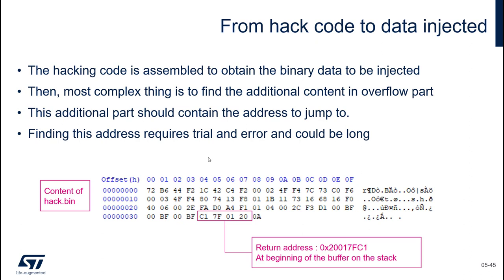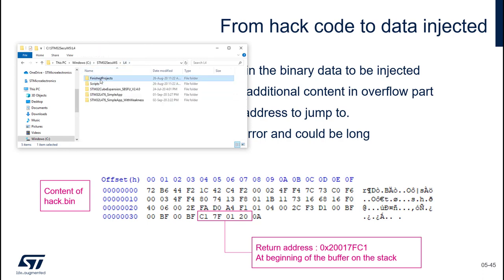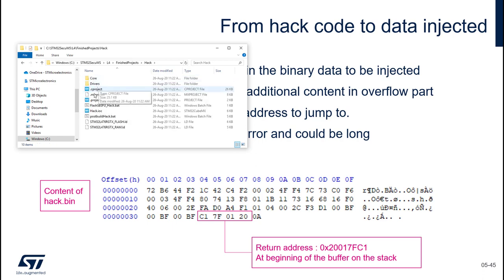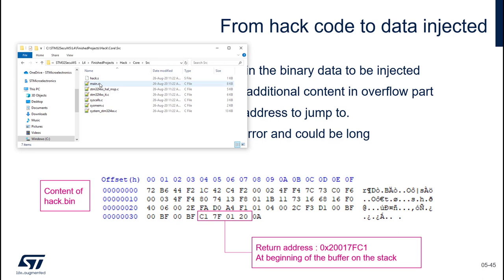All this content was built manually. You can find the project used to build this hack in the finished project folder called 'hack'. In the main.c you have the assembly file that was used, tested on the simple project. You can reproduce it, modify it, and make your own trials. That's it for this appendix - thank you for your attention.